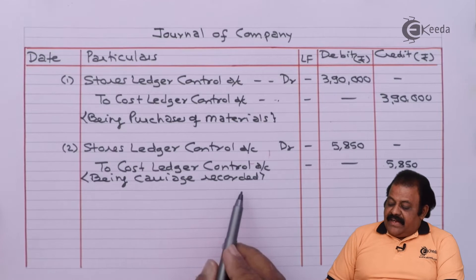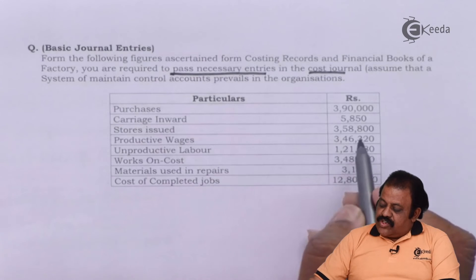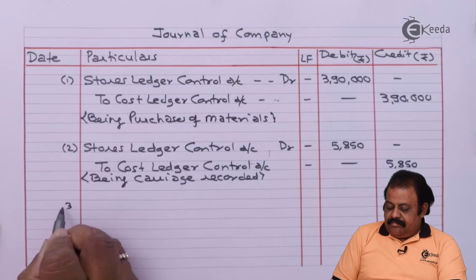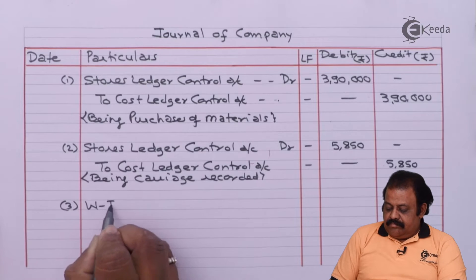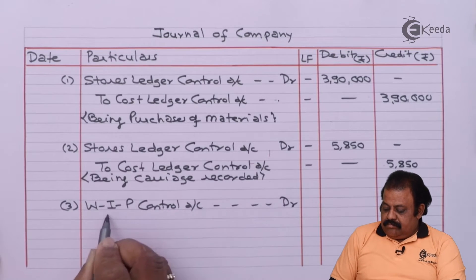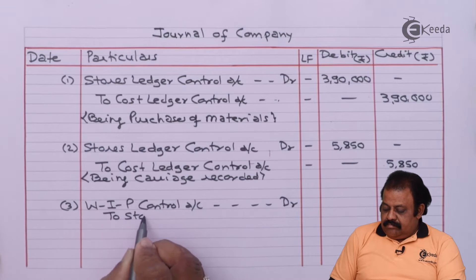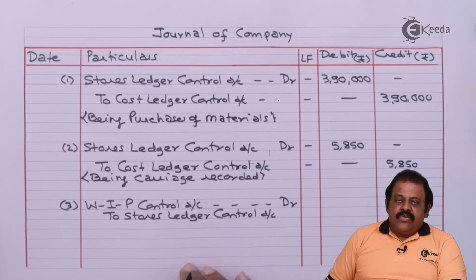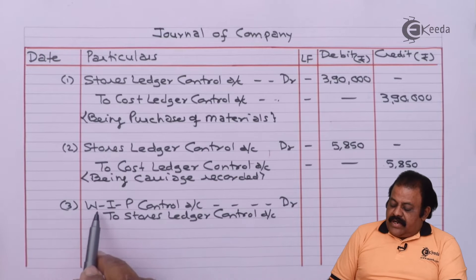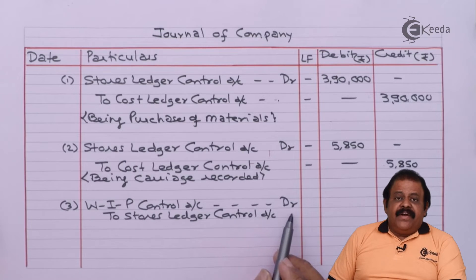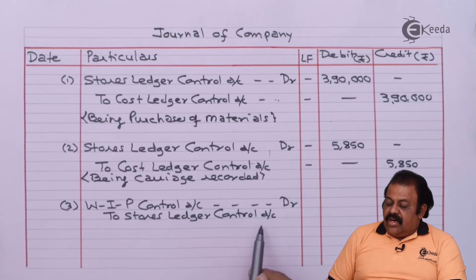Stores issued 3,58,800. For stores issued, Work in Progress Control Account will be debited and Stores Ledger Control Account credited, being stores issued recorded.